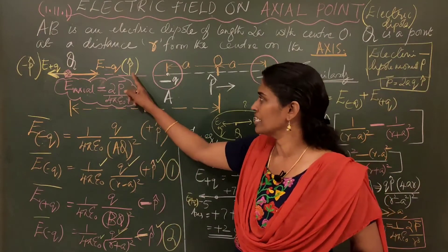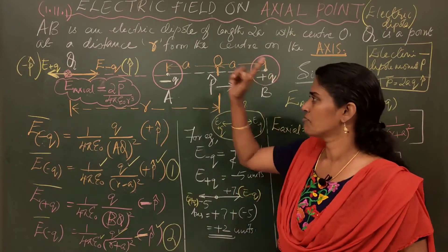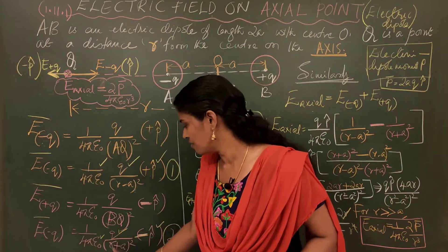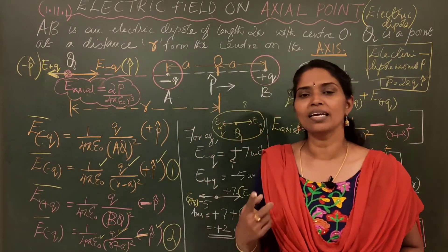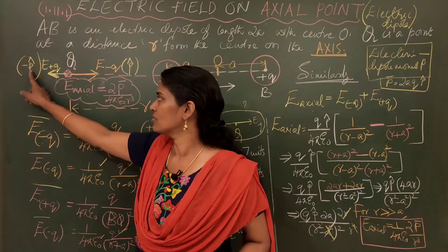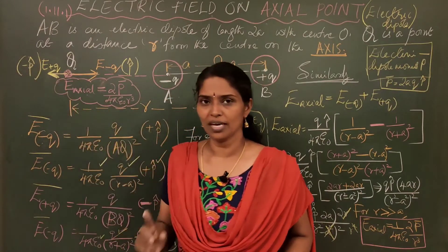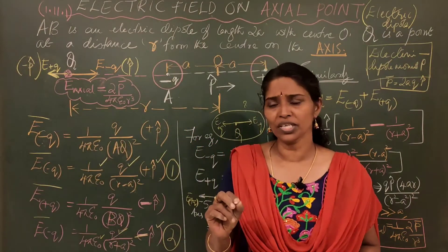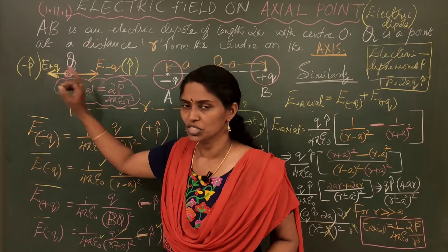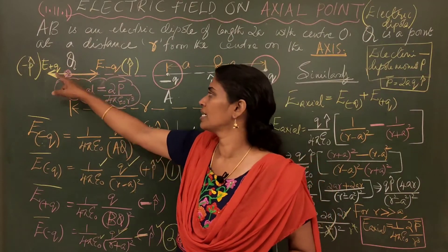Now, what about E plus Q? E plus Q is at a distance R plus A from Q. So, the answer is 1 by 4 pi epsilon 0 Q divided by R plus A the whole square. But, this is a positive charge. This is a positive charge, so it repels. So, what is the direction of E minus Q? Minus P cap. Now, one more thing. Just look at the arrows. This has a bigger length. This has a smaller length.